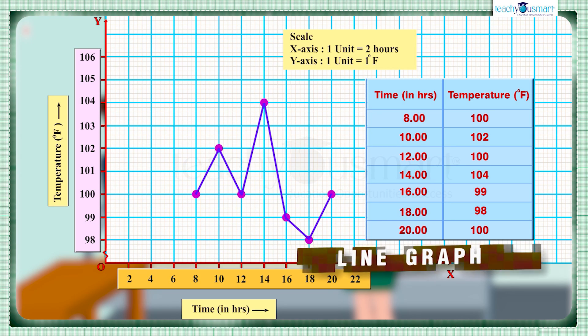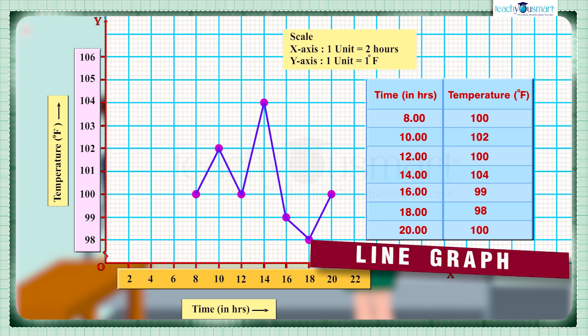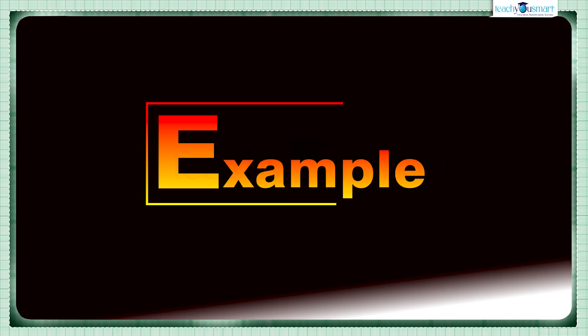We get a line graph, the time-temperature graph. Let's see another example.